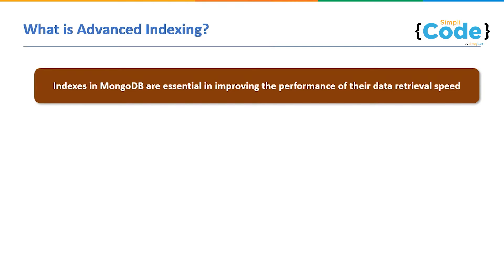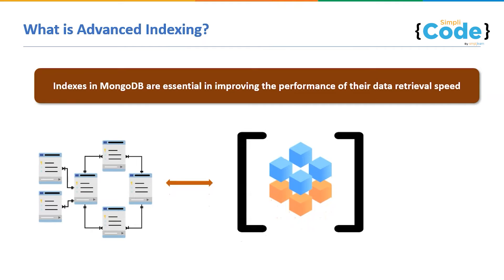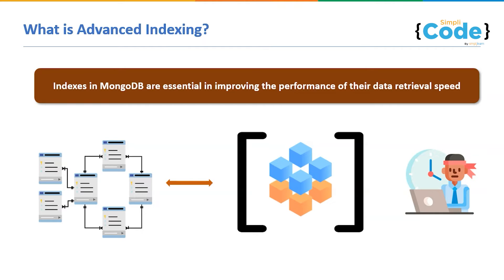In our previous tutorial on indexing in MongoDB, we covered basic indexing techniques like single field and compound fields. Now what if the database is working on an array of fields within a collection? Let's say if I have a students database and I'm working on sub-documents — documents that have array fields in them. In such a case, indexing becomes quite difficult. Indexes are applied at the collection level and can store the value of specific fields or a set of fields.